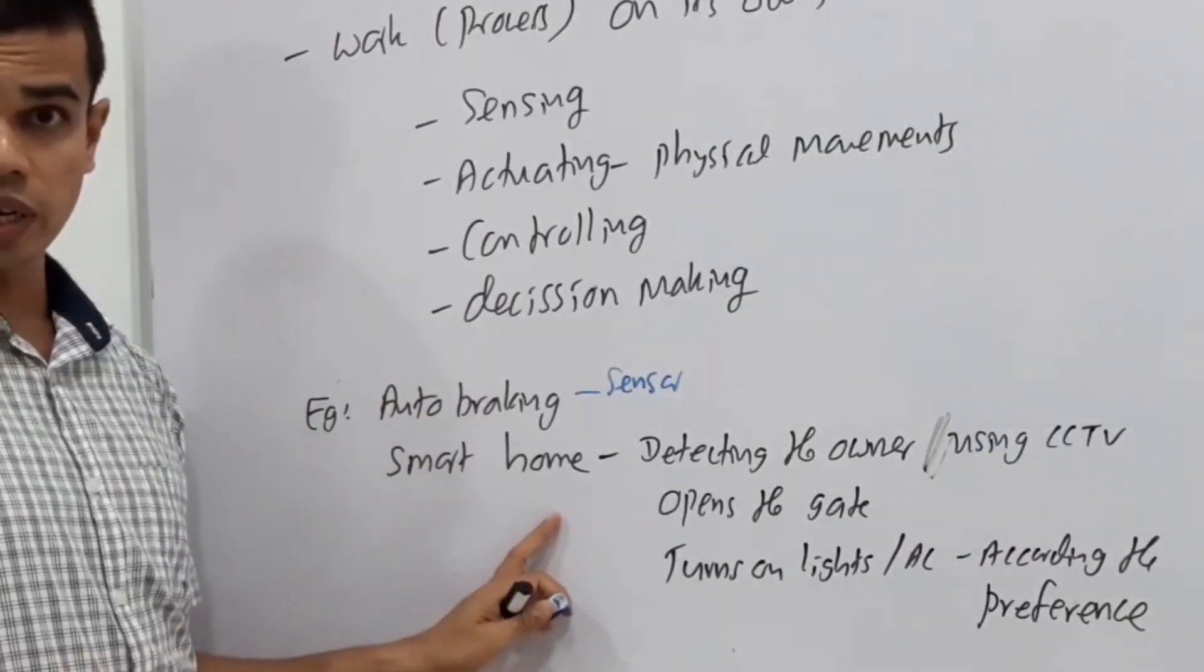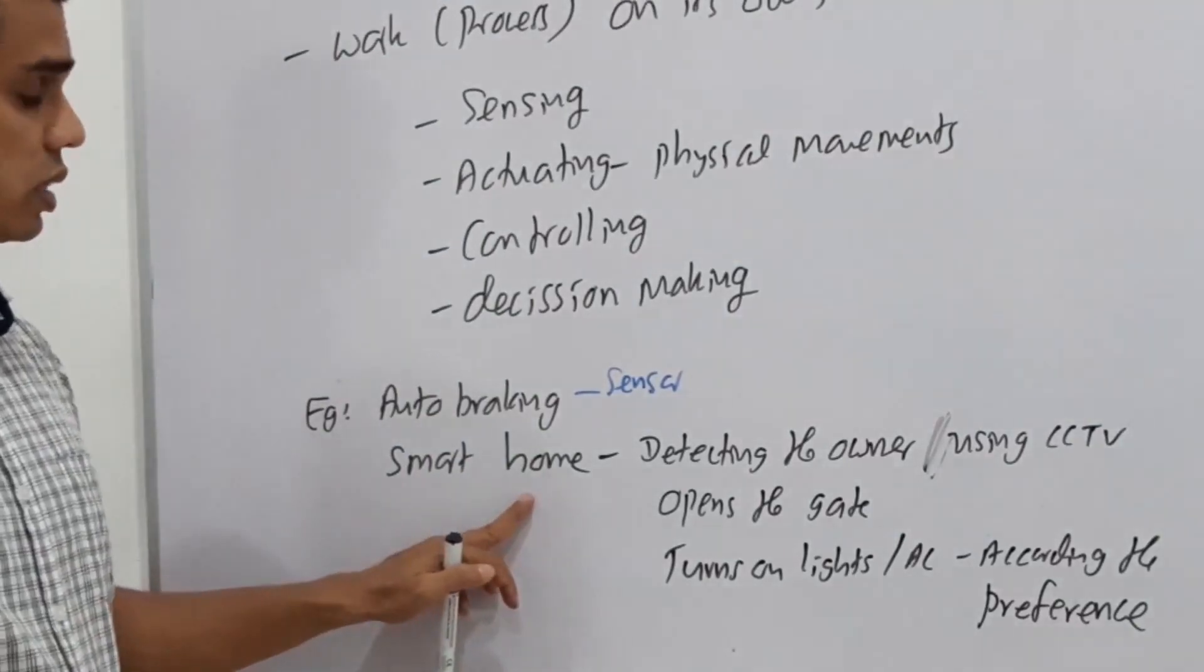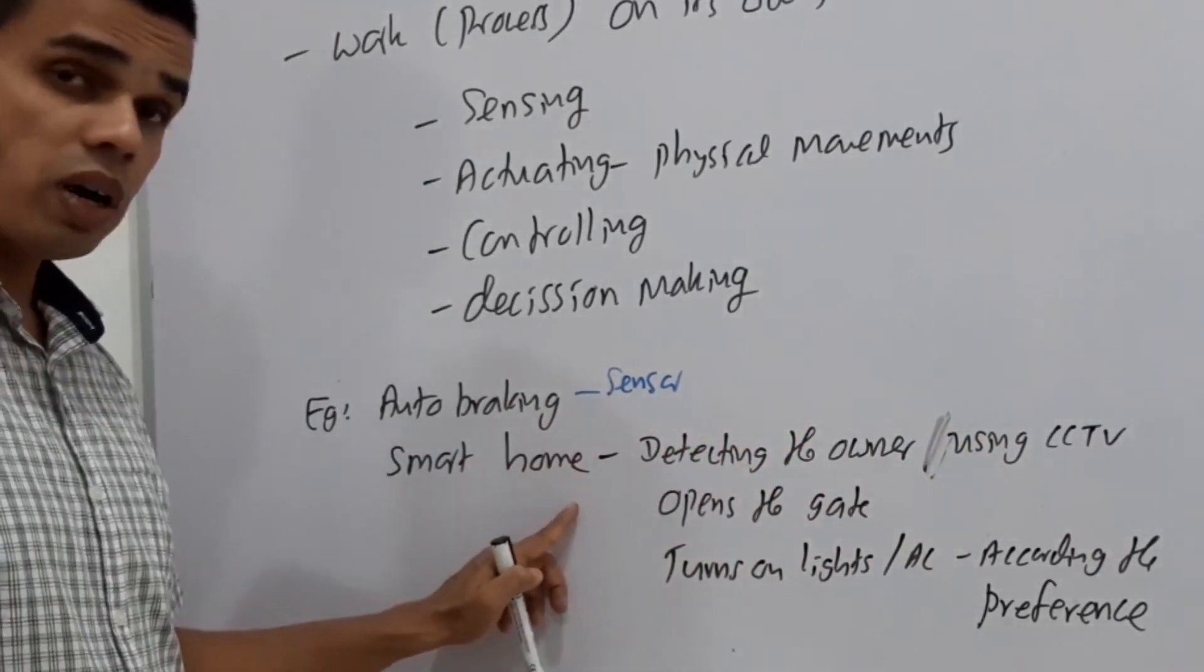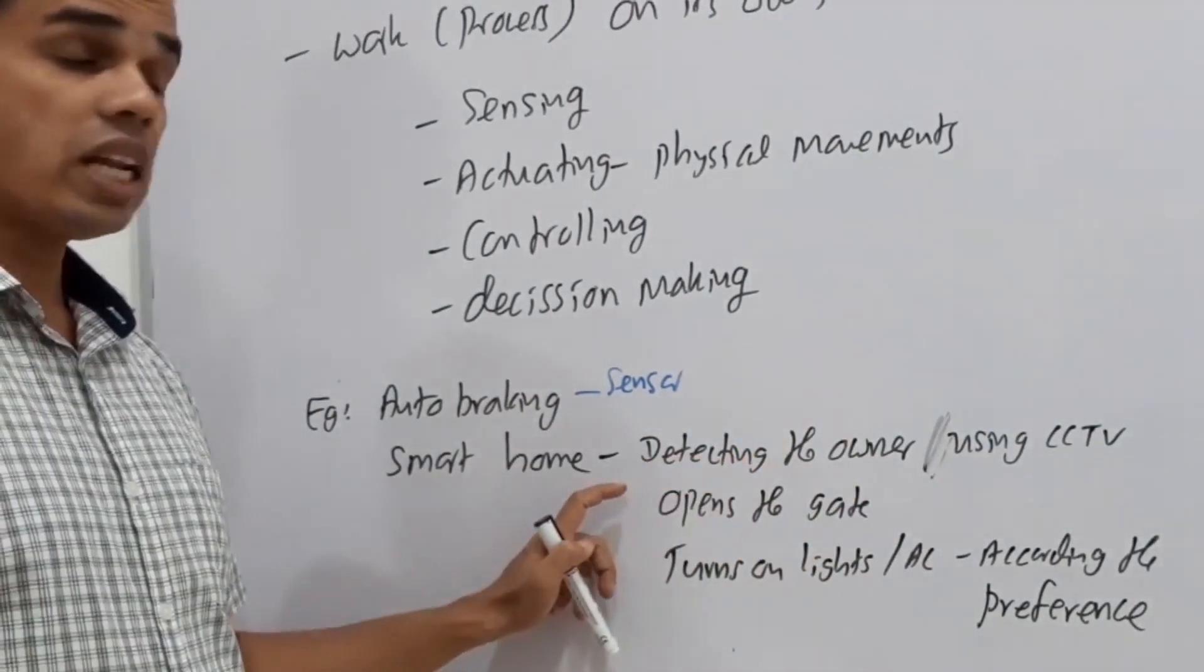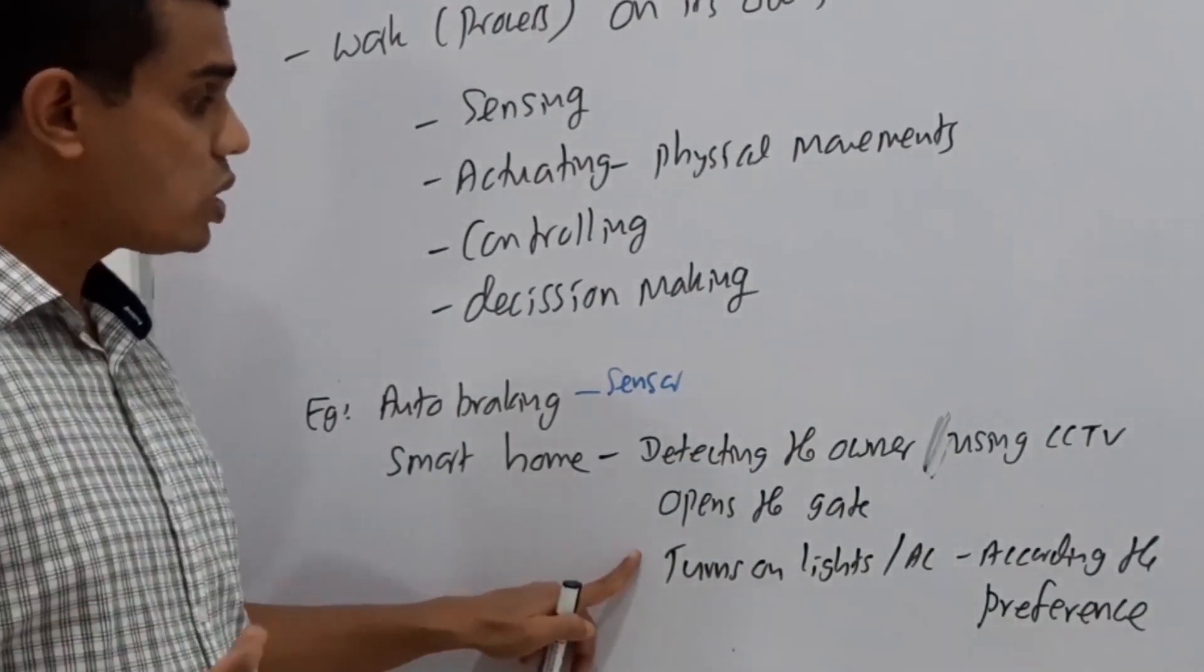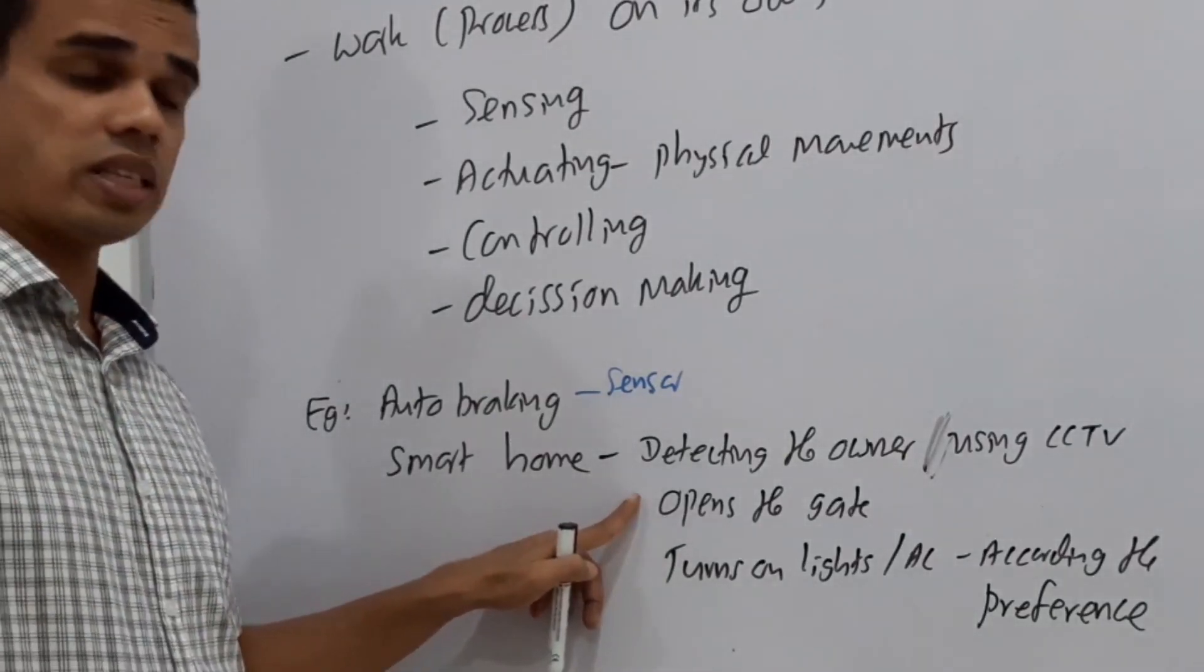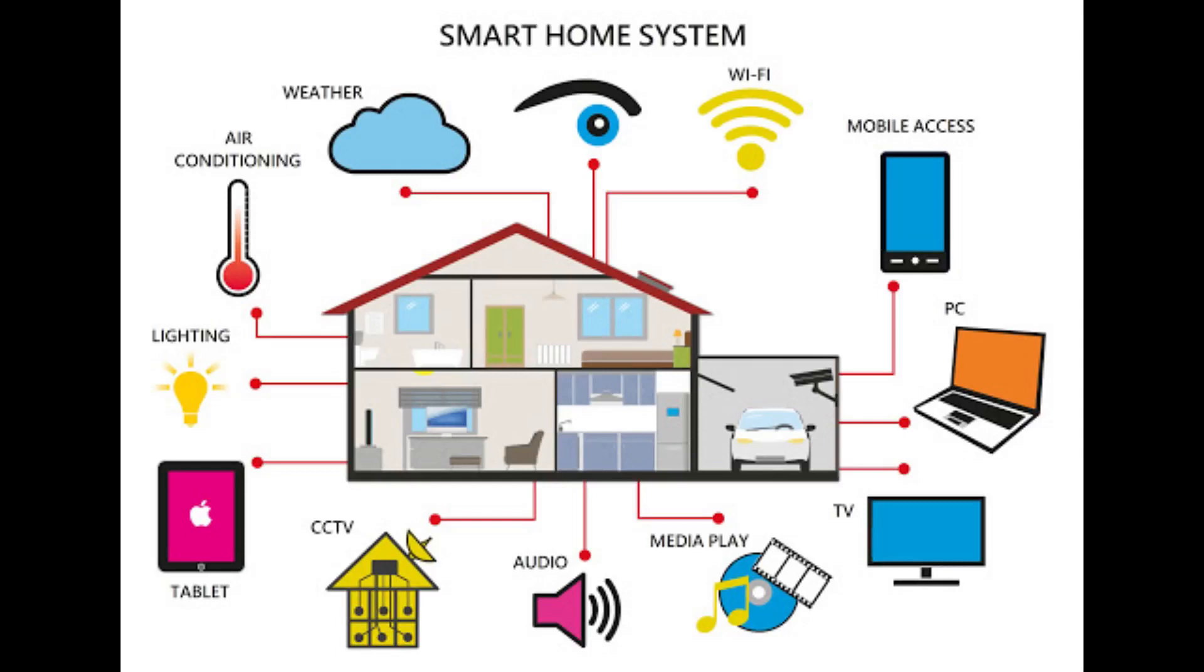There's a sensor which will detect the obstacles and the system will apply braking. Smart, fully automated. At the same time, we have smart homes nowadays. They are the complete work or main works of the home are automated. Sometimes under the smart home, there are CCTV cameras set and from the cameras, the system, the smart home will detect who the owner, who is coming to the gate and they will detect, they will identify the owner. If it is the owner, they will open the gate. If it is someone else, they don't open the gate. System will do it. No humans are required.